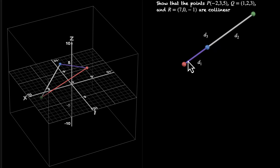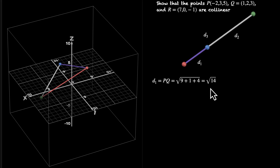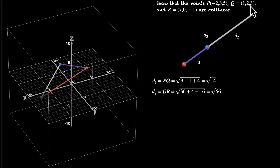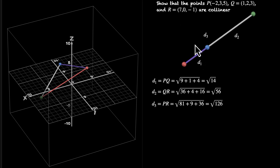Let's find the lengths. d1 = PQ: differences are (-2 - 1) = -3, (3 - 2) = 1, (5 - 3) = 2. So 9 + 1 + 4 = 14, giving PQ = √14. d2 = QR: differences are (1 - 7) = -6, (2 - 0) = 2, (3 - (-1)) = 4. So 36 + 4 + 16 = 56, giving QR = √56. d3 = PR: differences are (-2 - 7) = -9, (3 - 0) = 3, (5 - (-1)) = 6. So 81 + 9 + 36 = 126, giving PR = √126.